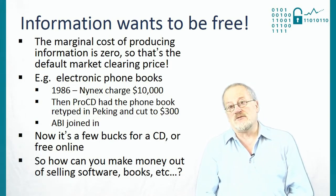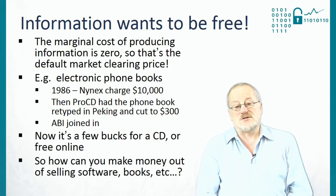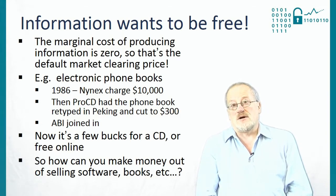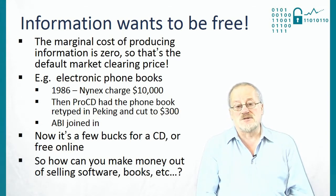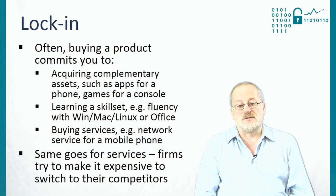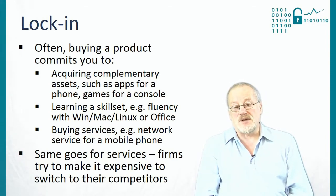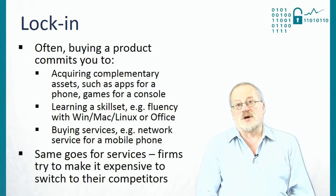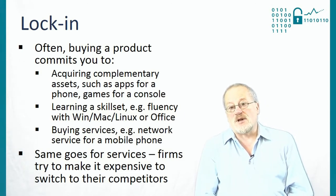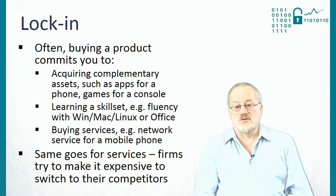So the big question facing the information industries is how do you make money out of this stuff? How do you make money from selling software or books or music or films or anything else? There are three key things here. The first is lock-in, because often buying a product commits you to acquiring complementary assets — such as you buy apps for your phone, you buy software for your laptop, you buy games for a console, you buy music to go on your iPod.